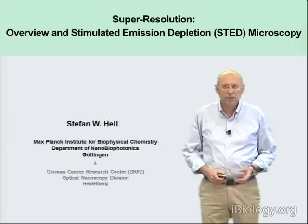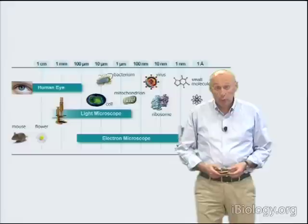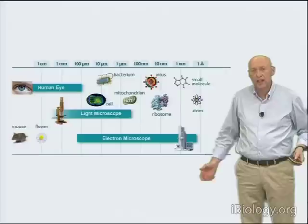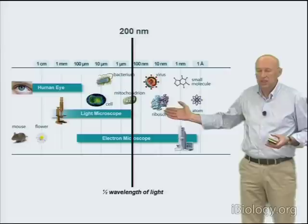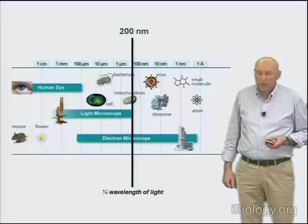I'm Stefan Hell. In the coming lecture I'm going to explain the principles of super-resolution fluorescence microscopy with emphasis on STED microscopy. We've all been told that the resolution of a light-focusing microscope is fundamentally limited to about 200 nanometers. So if you have features residing at a closer distance than 200 nanometers, half the wavelength of light, it's not really possible to tell them apart.